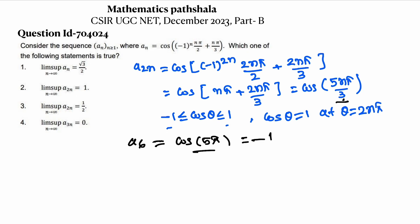Now, if I put n = 6, what we get? We get a_12. That becomes cos(10π). That is form of 2nπ. Therefore, that gives 1.